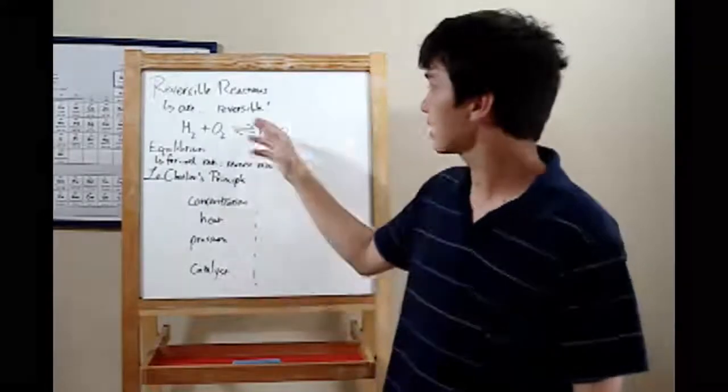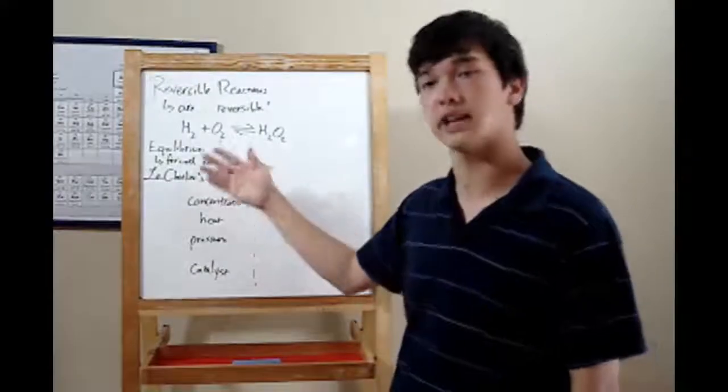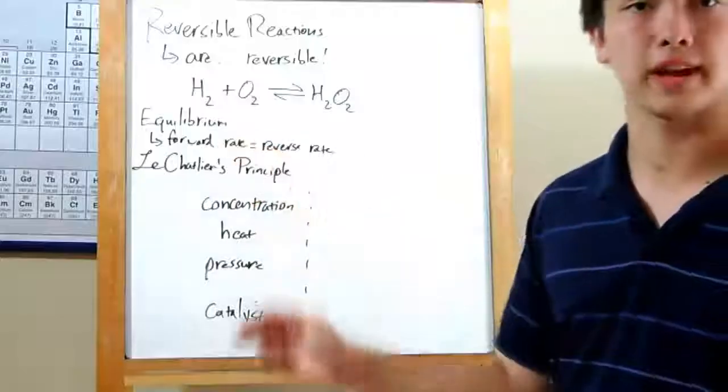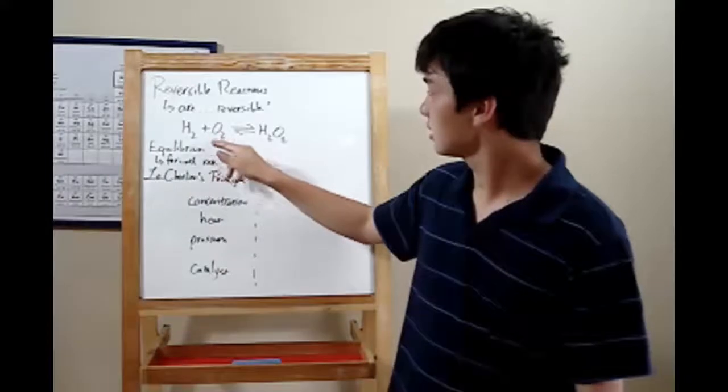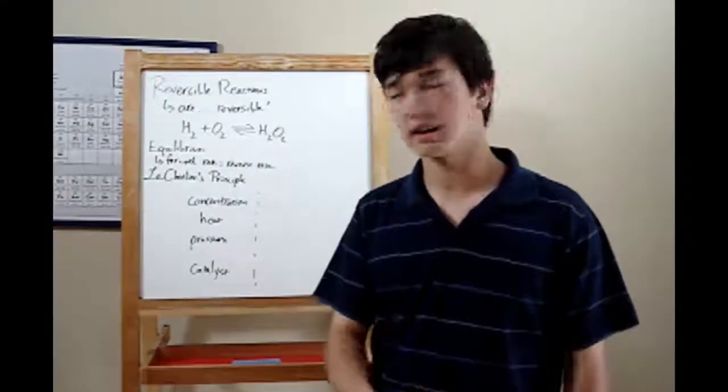Now, moving on. Leave a reversible reaction in a jar for long enough, and it'll reach a state called equilibrium. That's when the forward rate of reaction is the same as the reverse rate. But, as a result, all of the amounts, both products and reactants, will remain constant.